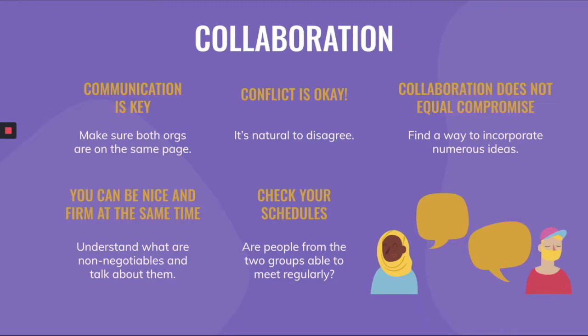You can be nice and firm at the same time. Understand what your non-negotiables are — like budget, date, or expected audience size — and be clear about those at the beginning of the process to decide if your collaboration will be successful. Finally, check your schedules: are people from both groups able to meet regularly, do you have the same event date in mind, and can both groups contribute equally over the planning process? These tips will help make your collaboration a success.